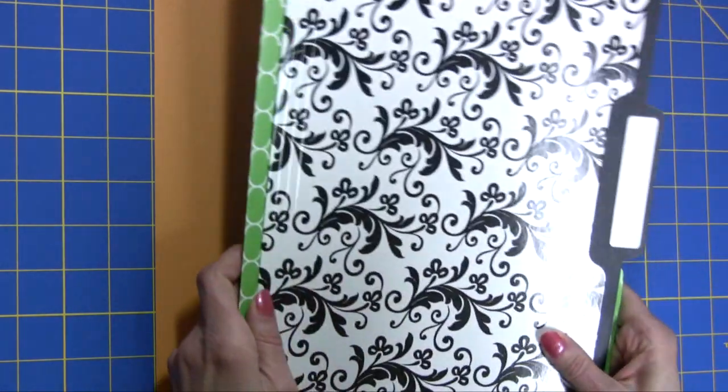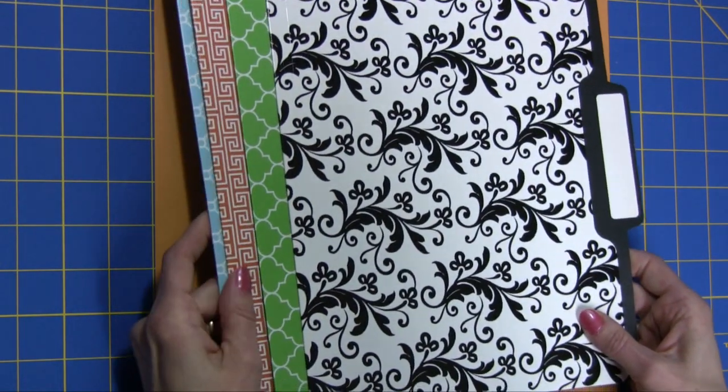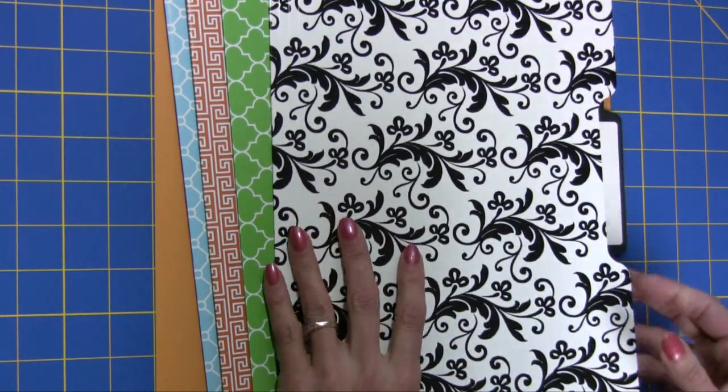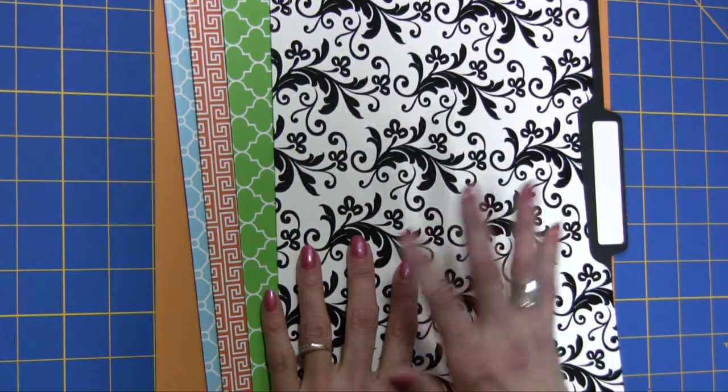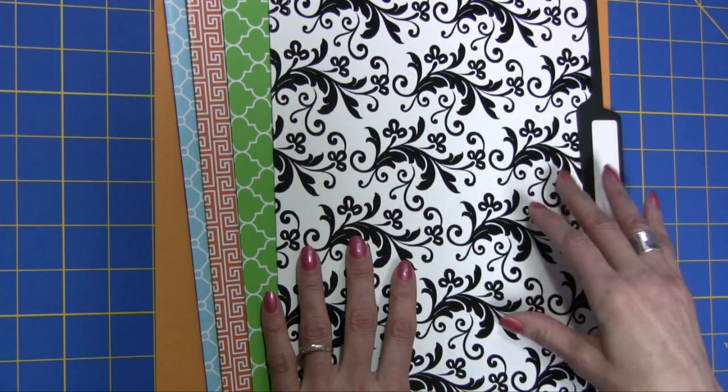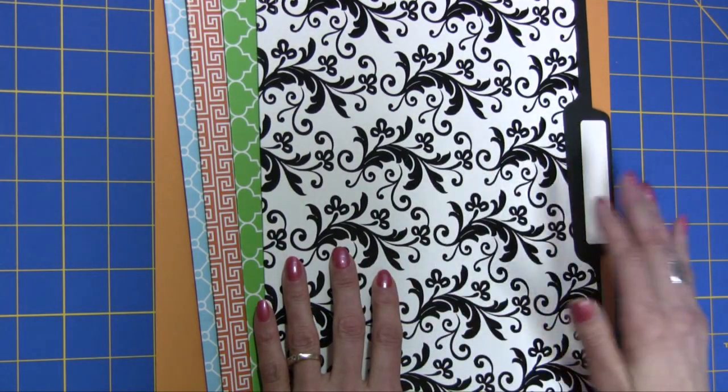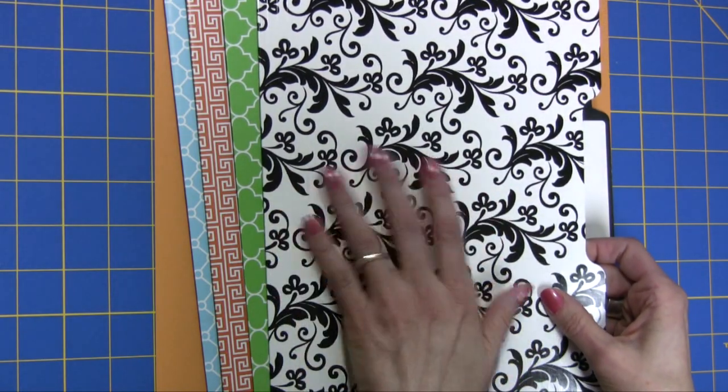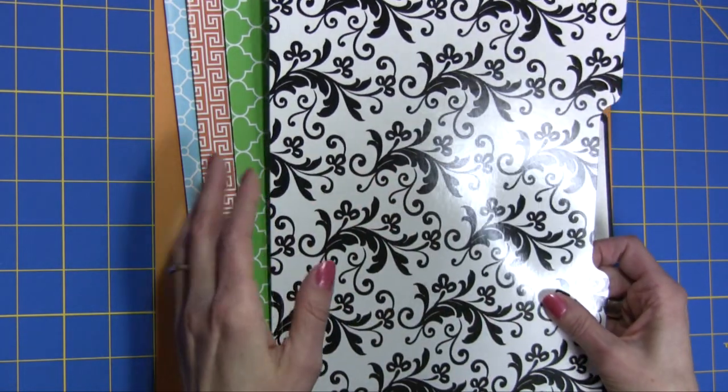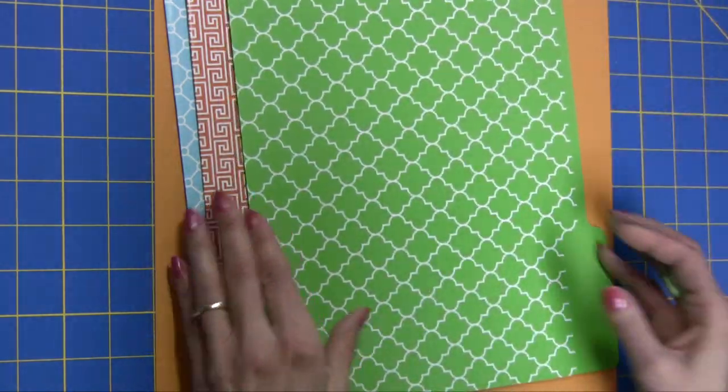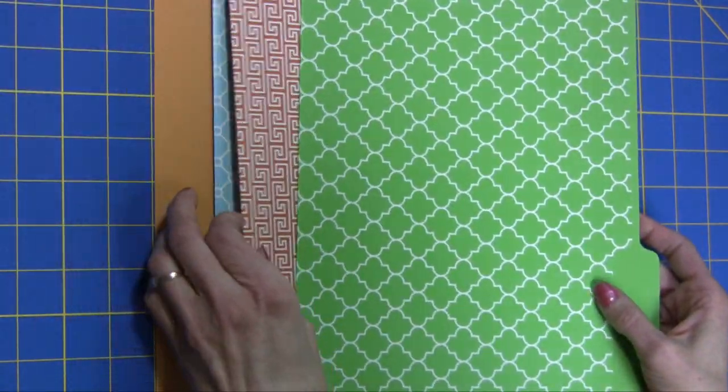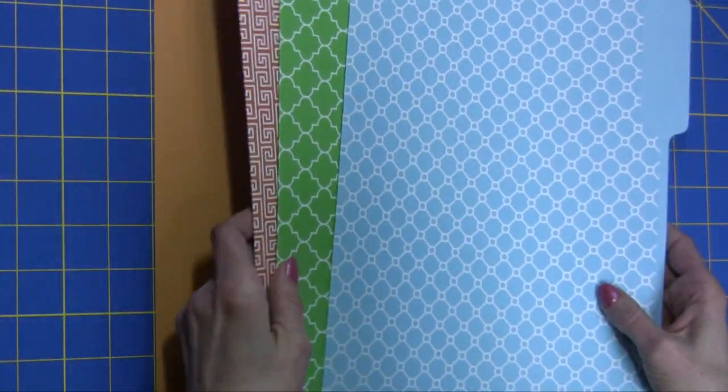One of the fun things about making a smaller version of the file folder notebook covers is that you can use decorative file folders. This one I'm going to use with black satin ribbon instead of a magnet closure, and I purchased this at Staples. Our Staples has a bin of different patterns and you can buy them individually. I purchased these from Target and they were in a packet, but I think it's just going to be so fun for spring to use the colors.